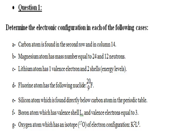Question 1: Determine the electron configuration of each of the following. Carbon atom is in the second row, column 14 — it has two energy shells K and L, and four valence electrons. So the configuration is K2 L4. Magnesium has mass number 24 and 12 neutrons, so Z equals A minus N: 24 minus 12 equals 12. Configuration is K2 L8 M2.